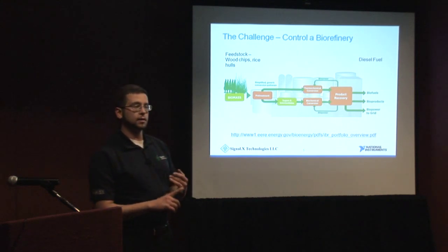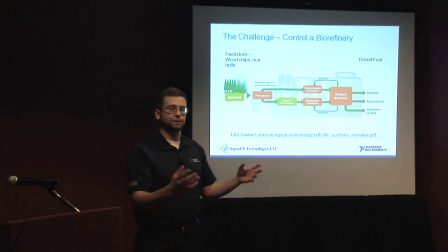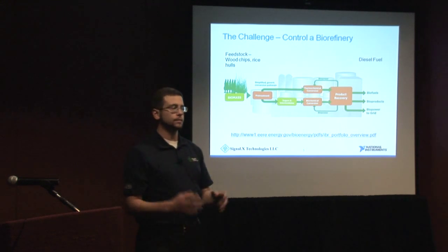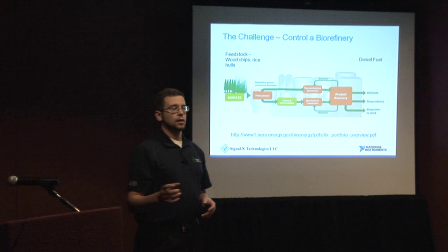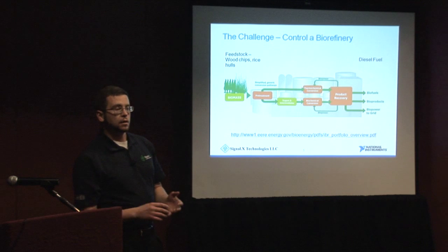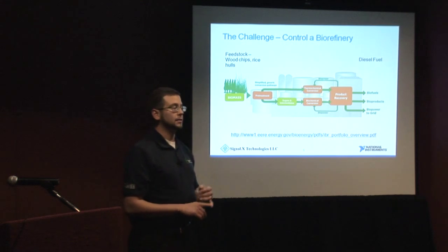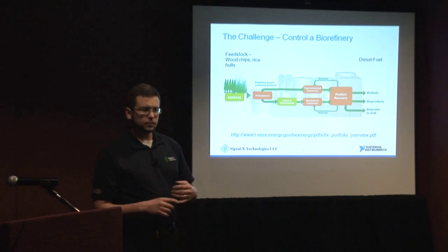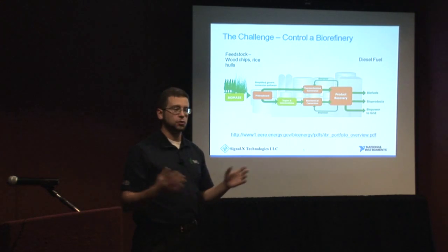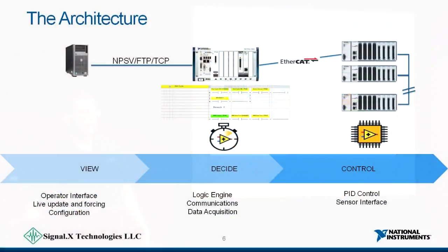There are actually two parts to the system. One takes wood chips or rice hulls — which they call feedstock — and turns that into syngas, which is basically a gaseous hydrocarbon. The second process takes that syngas through a catalytic reaction to produce diesel fuel. This plant is designed to take in about 25 tons per day of biomass. It's about two football fields in size, requiring distributed IO and quite a number of unique challenges.